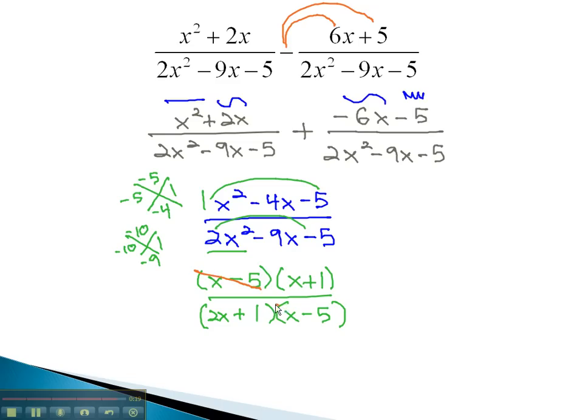Notice, we have a common factor of x minus 5 that can divide out, leaving our final answer of x plus 1 over 2x plus 1.